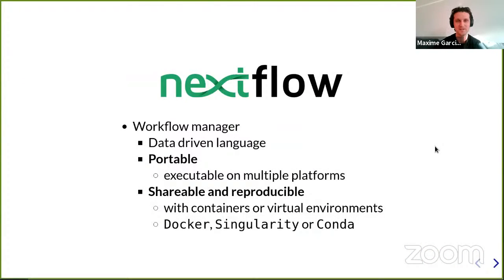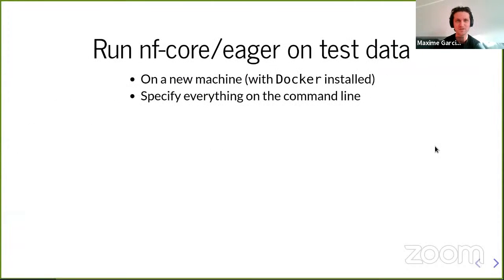What I like — what I actually love about Nextflow — is its portability, shareability, and reproducibility. As a kind of challenge, I'm going to run nf-core/eager, which is a pipeline I'm not very familiar with, on the provided test data. I'm going to assume that I'm running it on a new machine with just Docker installed, and I'm going to specify everything on the command line without using any config file or any profile, which is not something you should actually attempt.